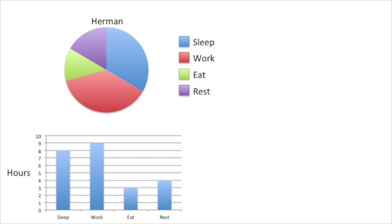With a bar chart it's obvious that Herman spends an hour more working each day than he spends sleeping. We can also easily see that he spends an hour more resting than eating. The bar chart makes this obvious.